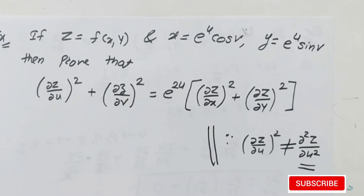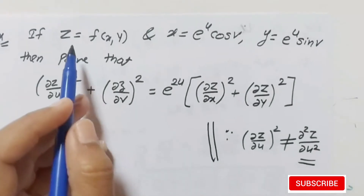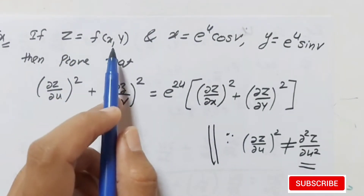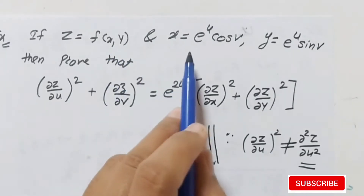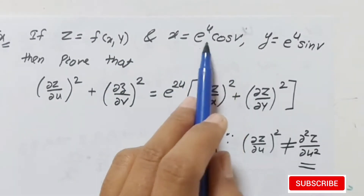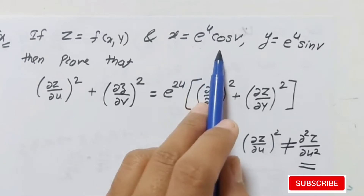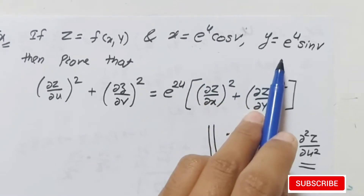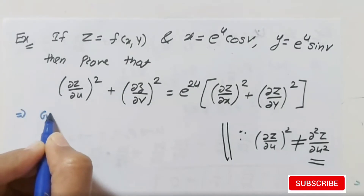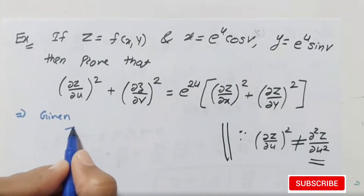To prove this, observe the given function: z is a function of x and y — it is clearly written that z is a function of xy, though the exact form is not given. But it is a function of xy, and x is a function containing u and v. That means x is a function of uv, and y is also a function of uv.